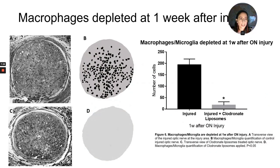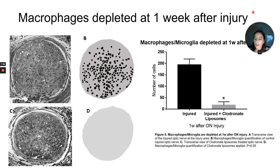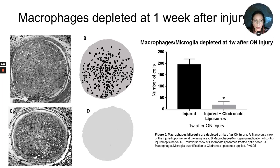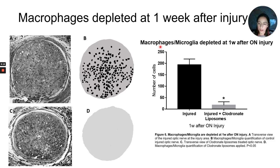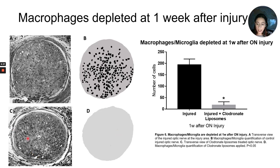We also wanted to evaluate the role of macrophages themselves, so we performed macrophage depletion using clodronate liposomes, applying them to the injured area as we did with saline or retinoic acid. At one week, we observed that the depletion was effective — very few or no macrophages were present in the area. In the upper panel you can see the control nerve with many cells and some degeneration starting, while in the lower panel with clodronate liposomes, you see a lot of myelin debris with no cells cleaning the area.